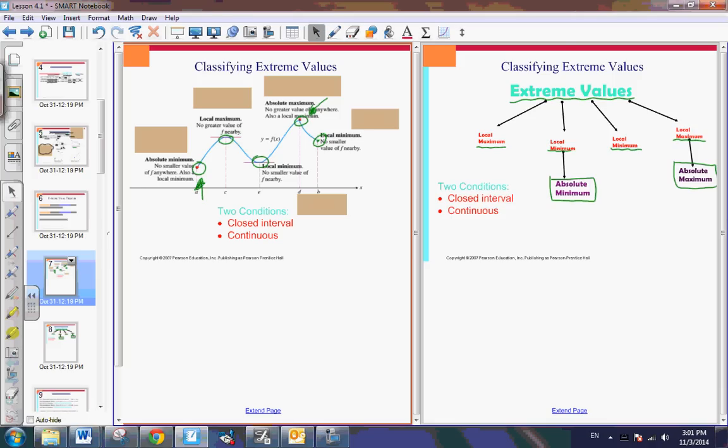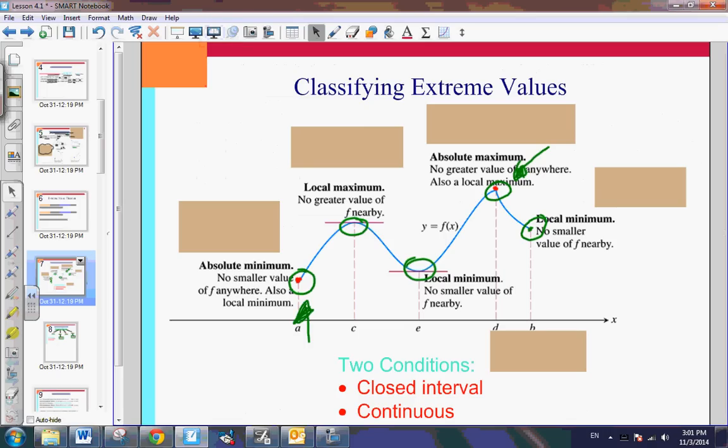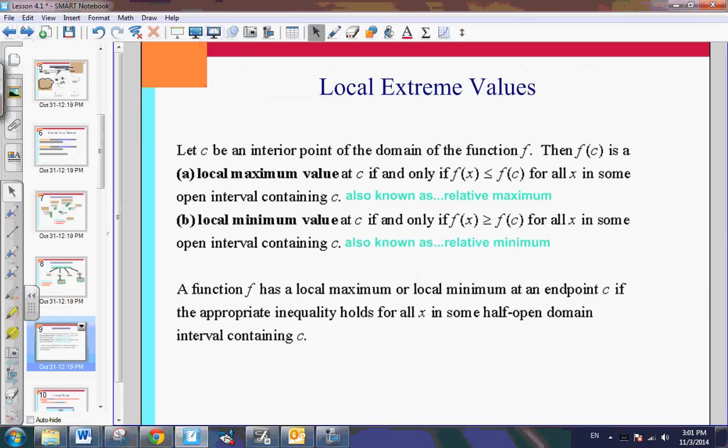Moving along. So let me slide forward a couple. We've already talked about this. This is just the mathematical vocabulary. So a local maximum value at a point C is such that F of C is greater than F of X, all in some open interval C. Now, another phrase for this would be instead of the local maximum, sometimes we call it a relative maximum.